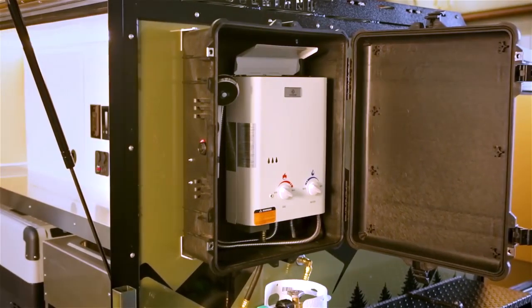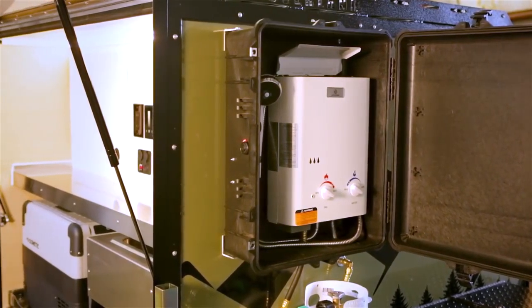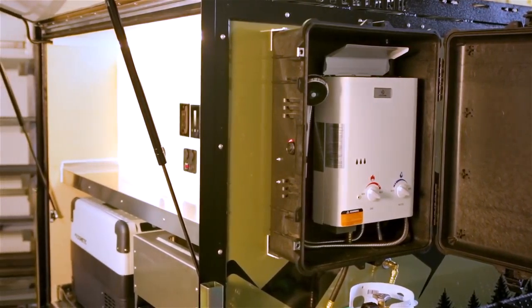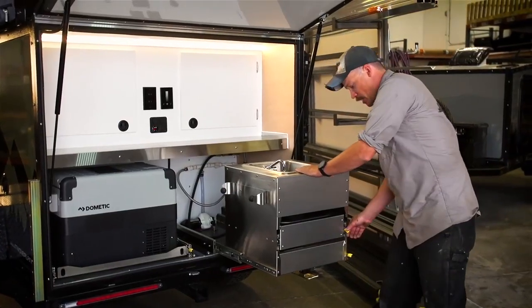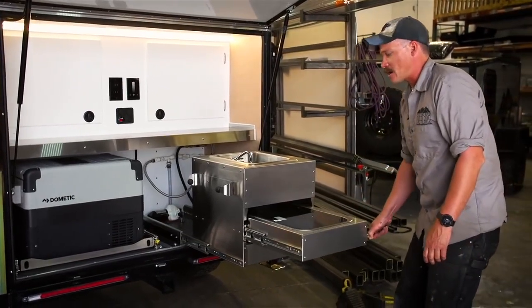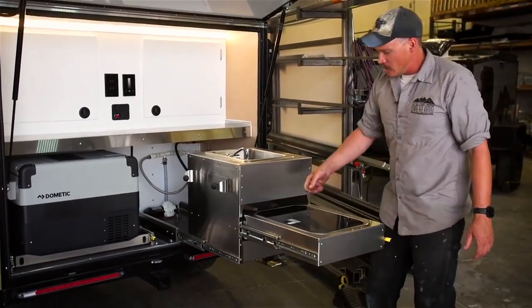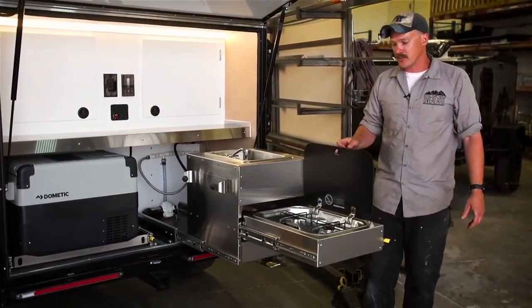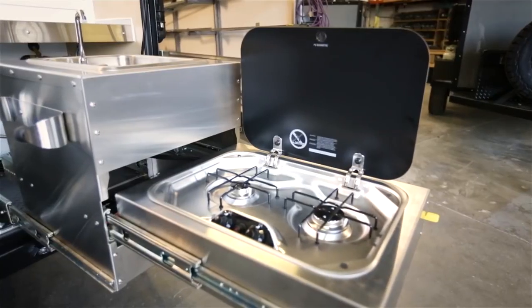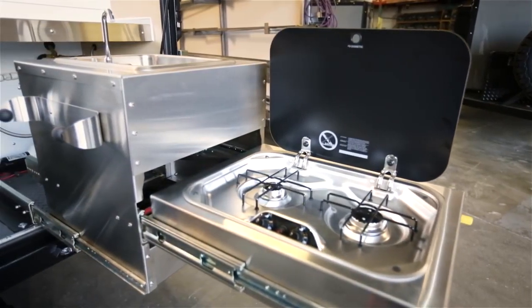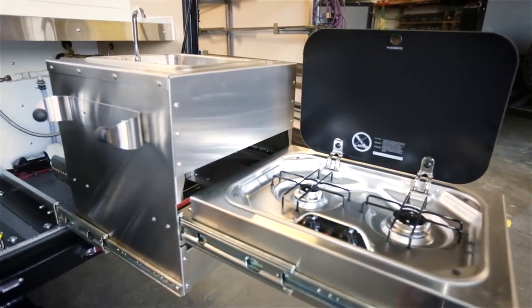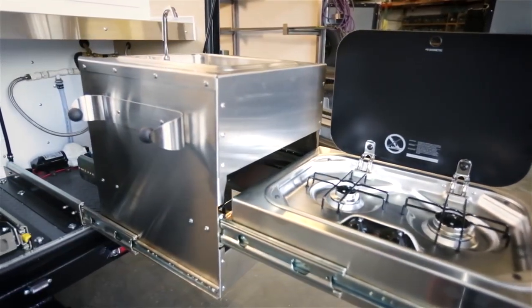So here is the kitchen on the 2019 Boreas XT. Down below is our pull-out kitchen. This is mounted on the Accuride 500 pound rated glides. They lock both in and out. We've got a two burner Dometic stove with a glass top here. And then we've got our stainless steel sink with on-demand water that's running off that 20 gallon water tank.